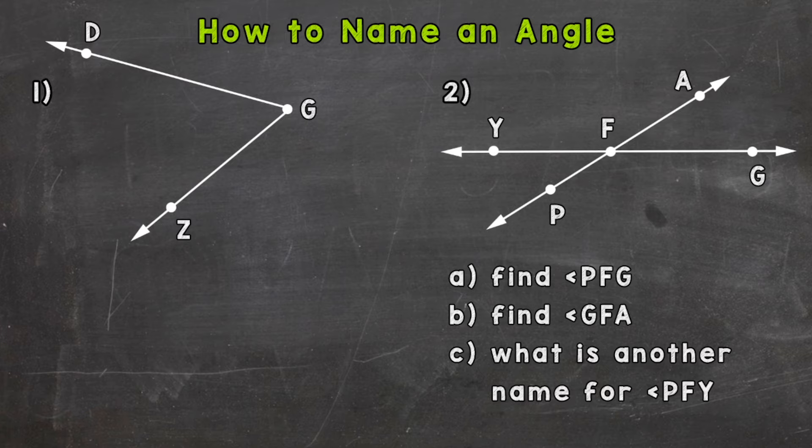The first thing we need to do when naming an angle is find the vertex. The vertex is where two lines or line segments meet in order to create the angle. The vertex is named by a letter. For number one, we have a G here corresponding to our vertex.